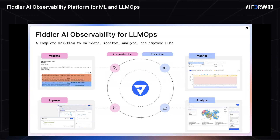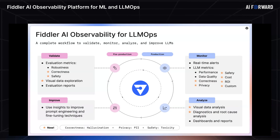LLM Ops, like everything else in life, is an iterative process. We move between pre-production and production phases, constantly refining as we harness the power of LLMs and create value. At Fiddler, we are crafting tools that simplify and streamline this journey. When it comes to production, we offer out-of-the-box, specialized, ready-to-use metrics tailored for LLM use cases. The vision is: you come in with your prompts, responses, and contexts, and we give you a bunch of metrics right off the box.